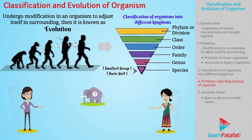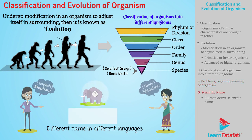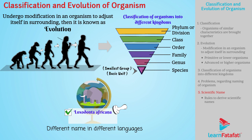For example, the same organism is identified with different names in different languages. So the problem was solved by accepting a universal name for the organism, called the scientific name.